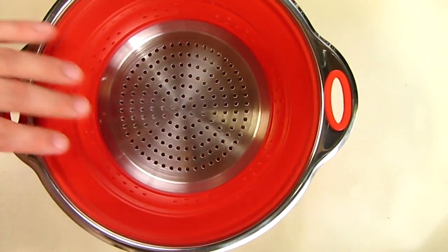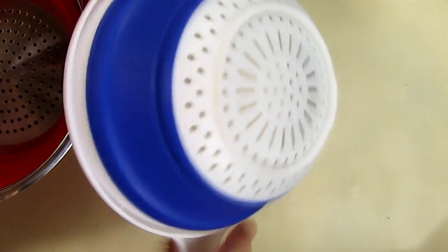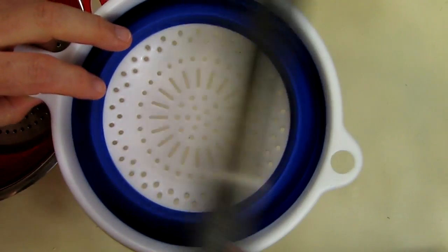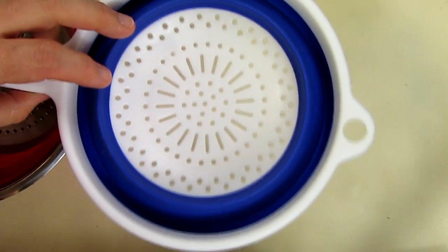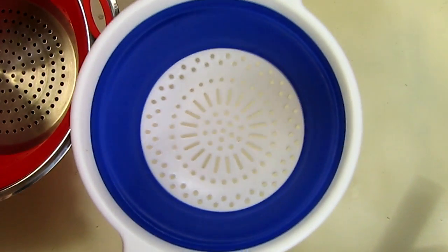Now what's nice about this, I have other units like this that collapse, but the size that's really popular is like seven inches, seven and a half inches. It's just not quite big enough to drain a lot of things, maybe vegetables.